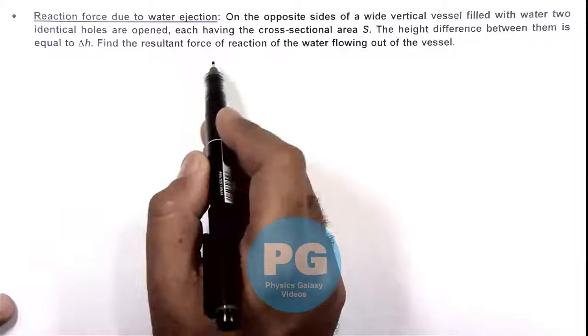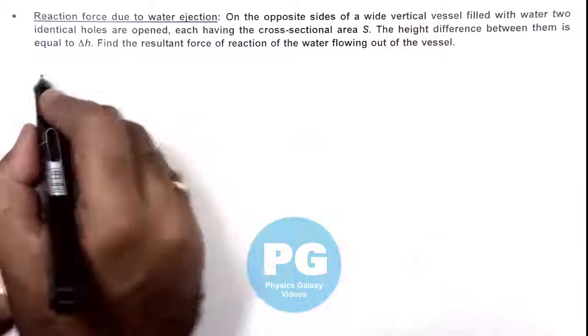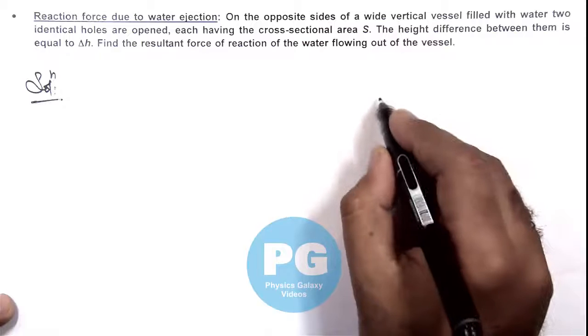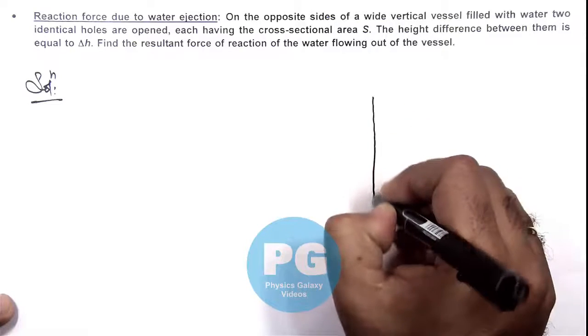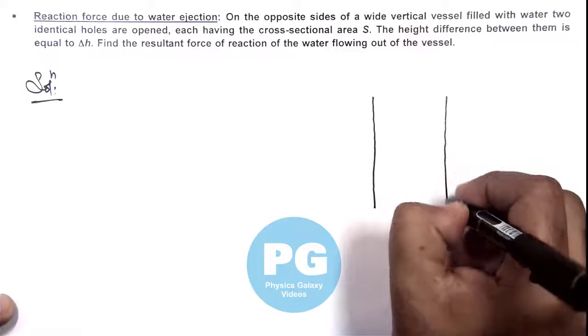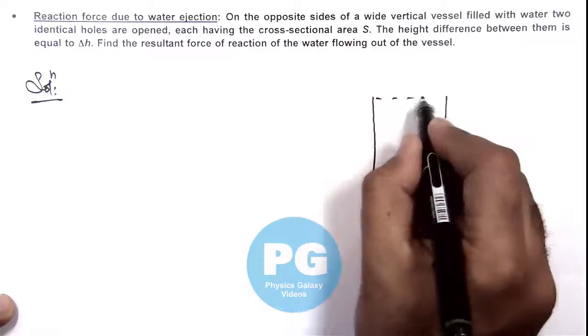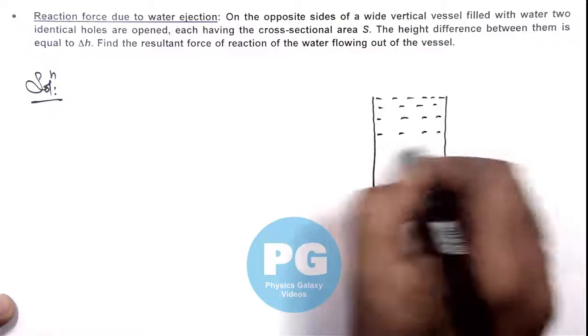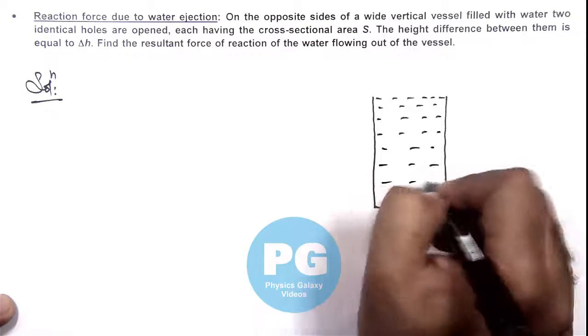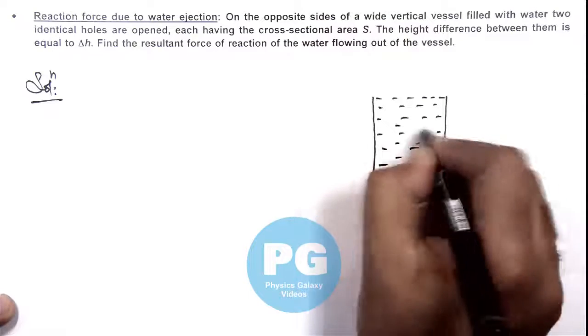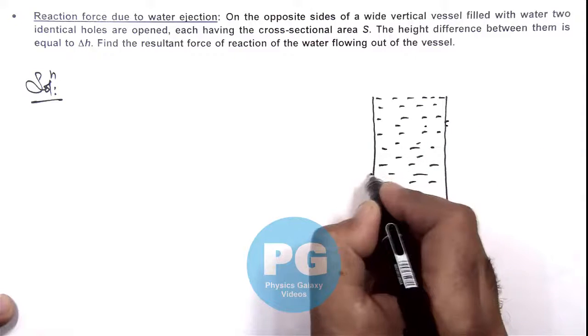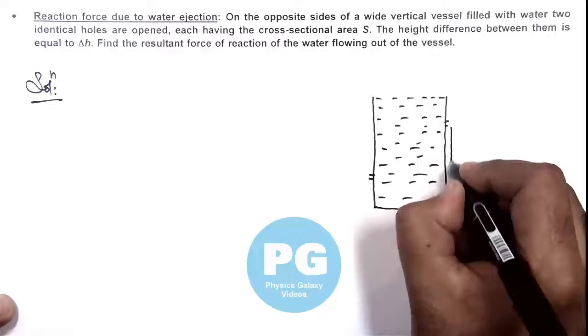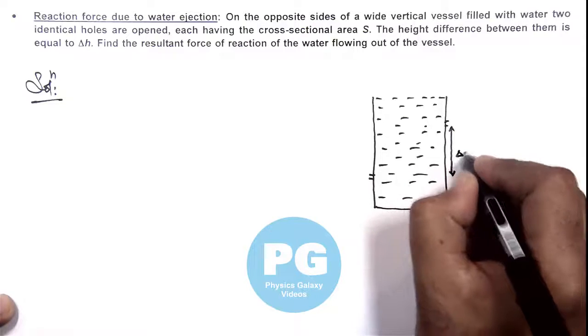We are required to find the resultant force of reaction of water flowing out of the vessel. So here if we draw the situation, we are given that there is a wide vertical vessel which is filled with water. And we consider it is open at the top. Now in this situation if we open the two holes, one is on this side, other is on this side, and the separation between the two holes is given as delta h.